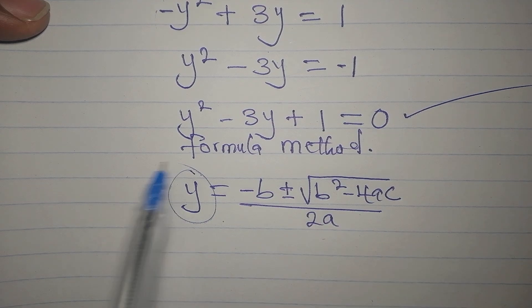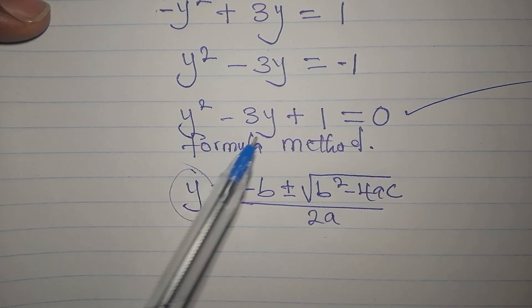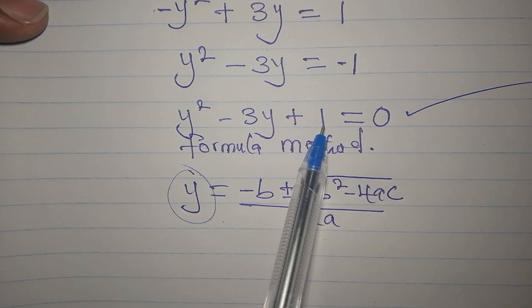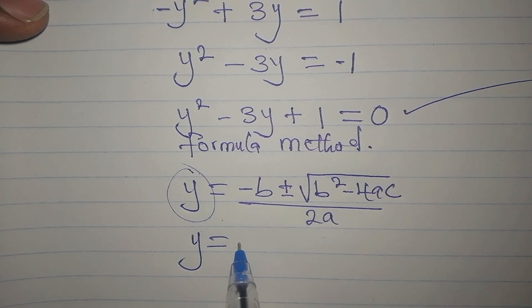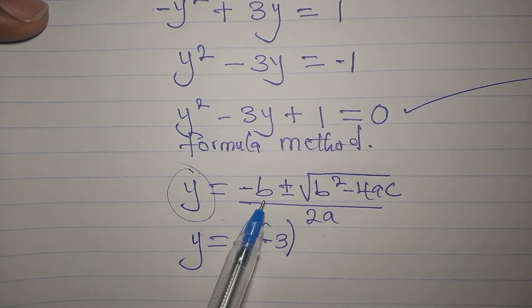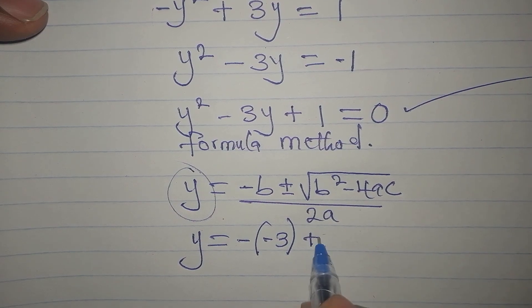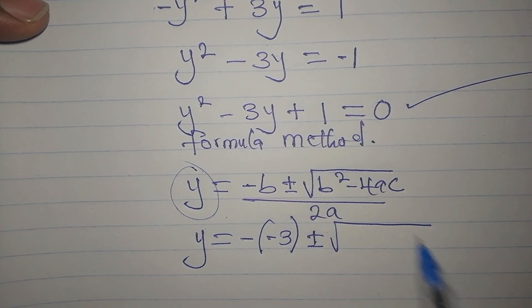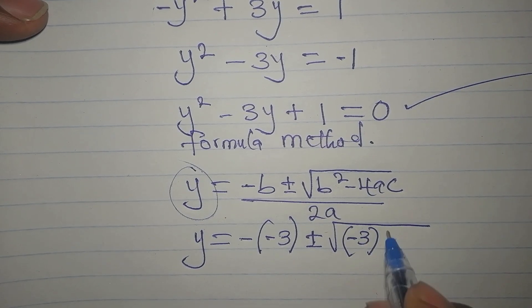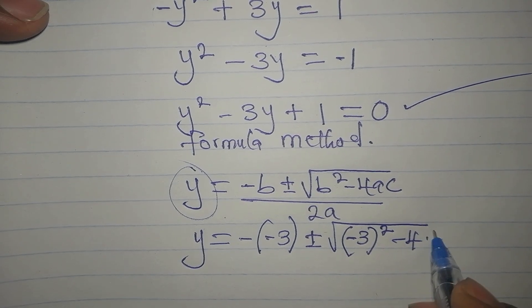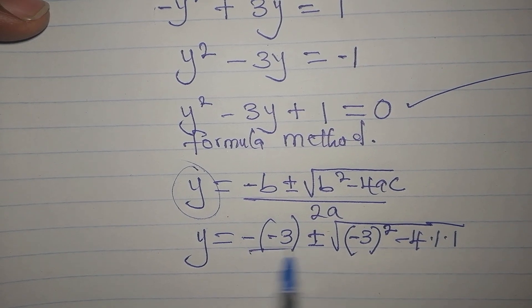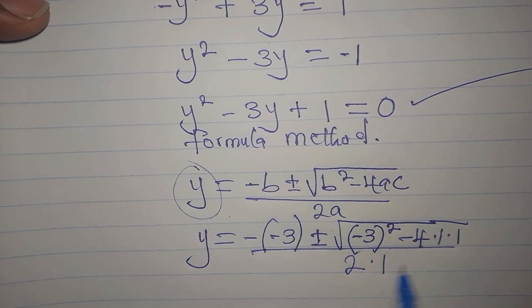And then our a is 1, the coefficient of y squared. b is minus 3. And then our c is 1. y now is going to be minus minus 3 because this negative will come first and b itself is negative 3. Then plus or minus b squared. b squared is minus 3 in brackets squared. Then minus 4 times 1 times 1. Because both a and c are 1. We divide this by 2 times 1.